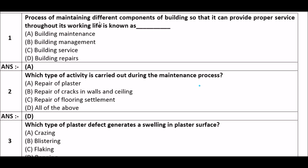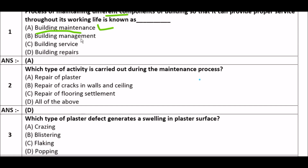Question 1: The process of maintaining different components of a building so that it can provide proper service throughout its working life is known as — option A: building maintenance, option B: building management, option C: building service, option D: building repairs. The right answer is option A, building maintenance. This is the definition of building maintenance.